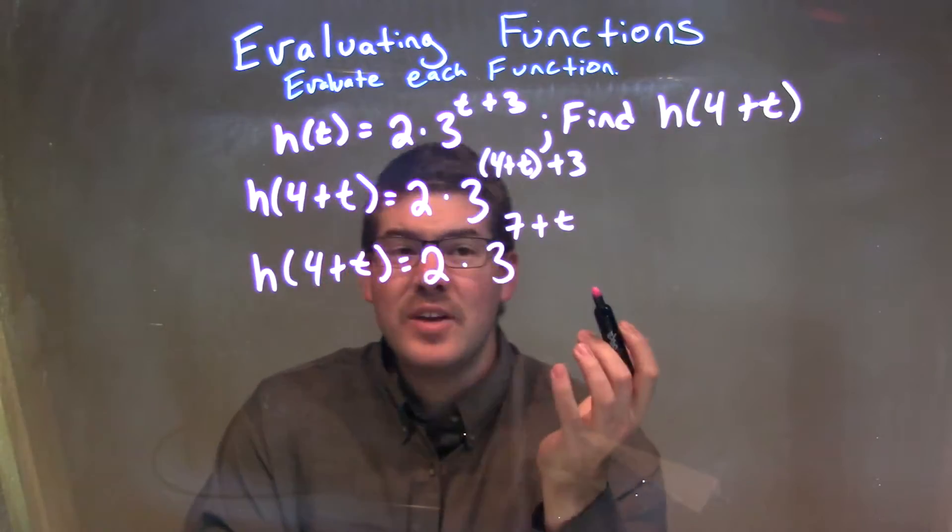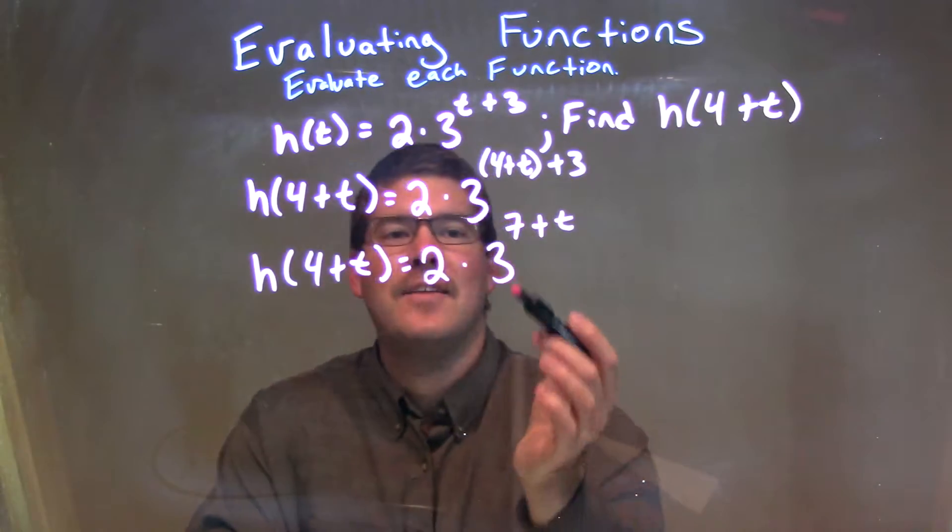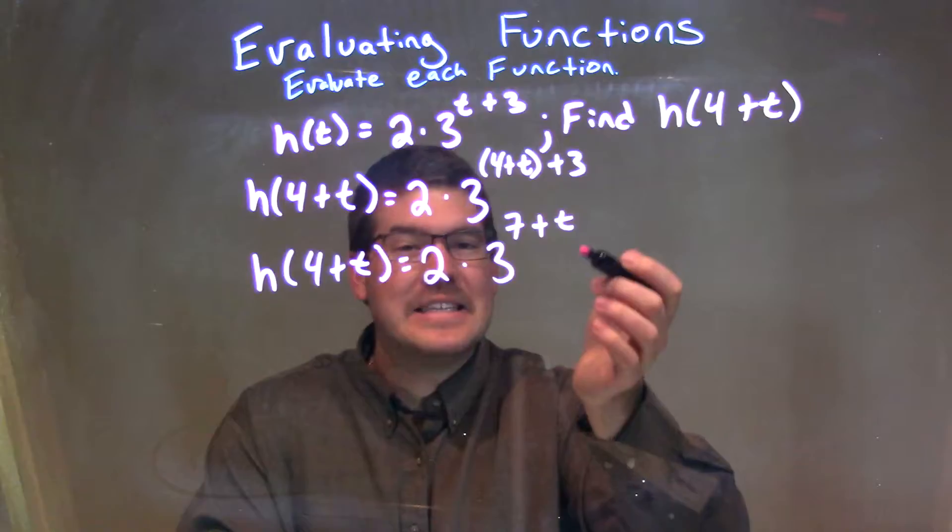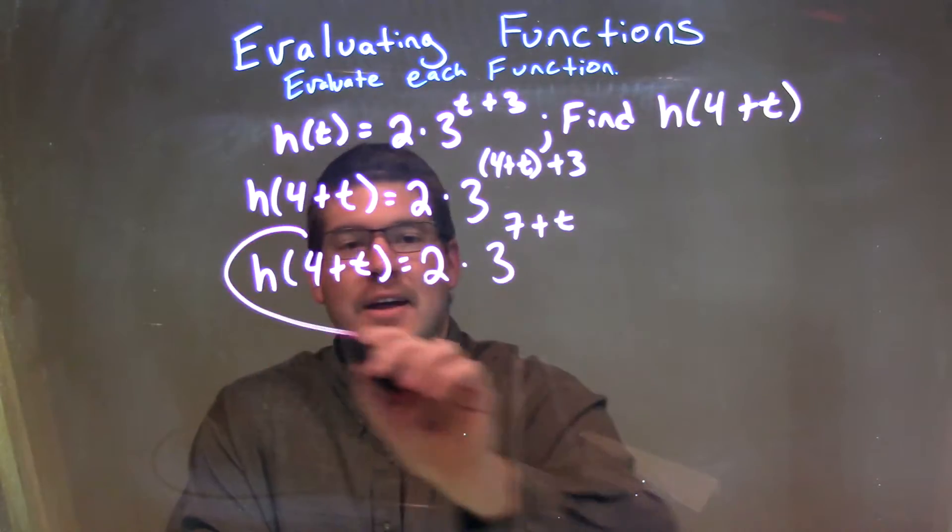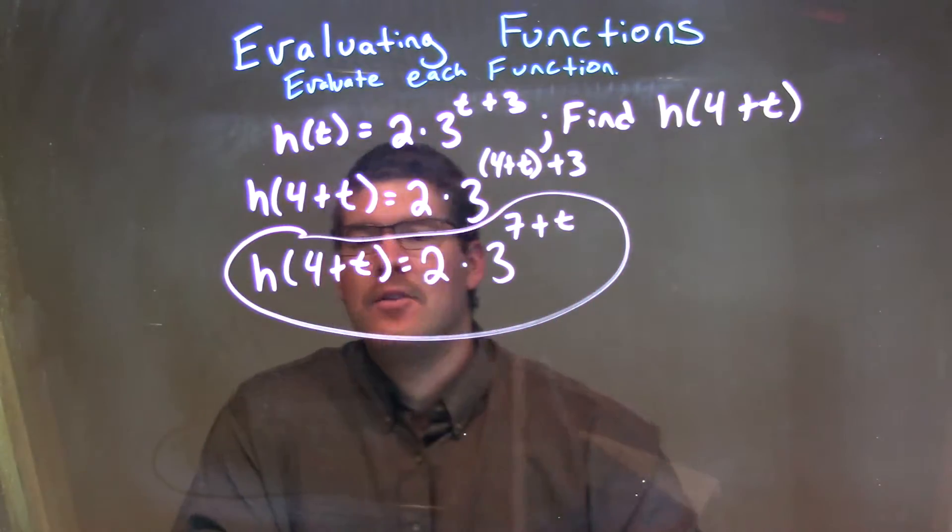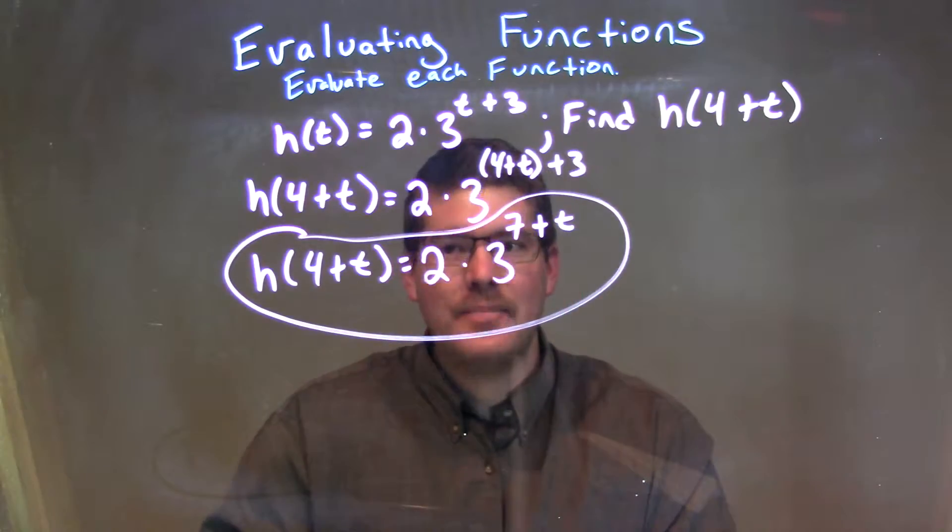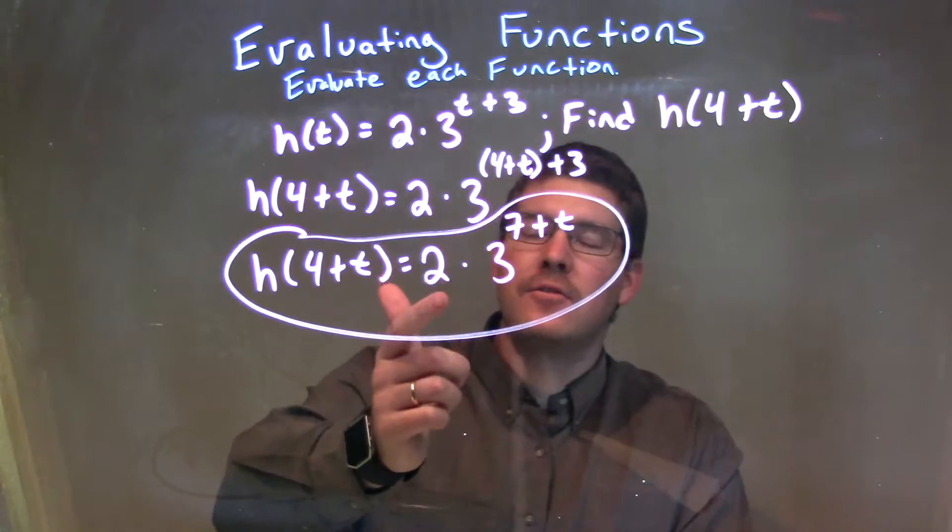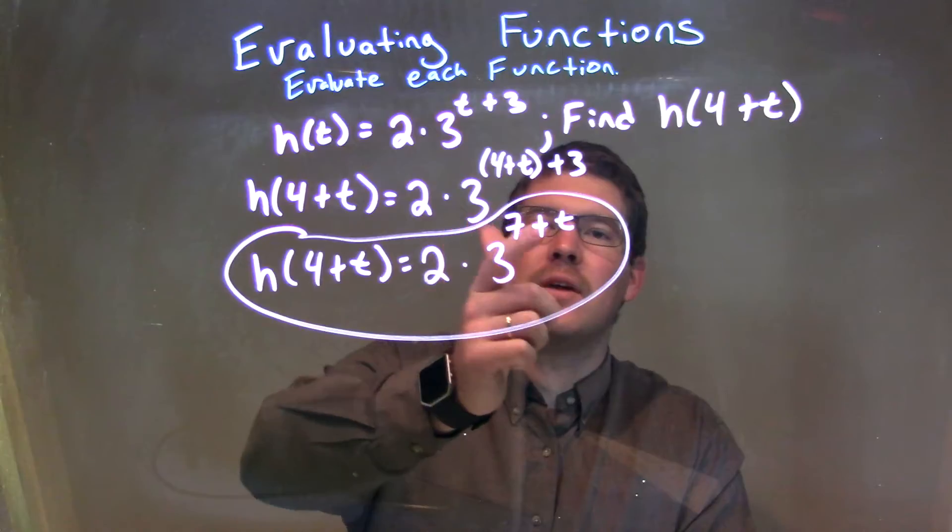Well, at this point, there's really nothing else we can do to simplify. We can't take the exponent of 3 to that power, because we don't know what t is, and the 2 just kind of stays out front. So, our final answer is h(4 + t) is equal to 2 times 3 to the 7 plus t power.